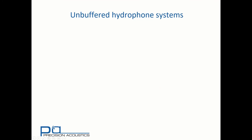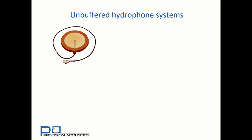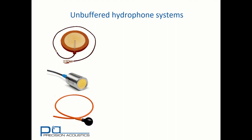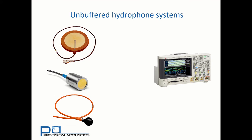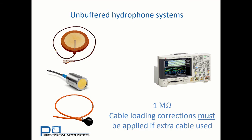If we have an unbuffered hydrophone system that doesn't incorporate a preamplifier — something like an older style Marconi membrane hydrophone, a piston hydrophone, or one of the ball or cylinder hydrophones that are common in underwater acoustics — these have their sensitivity determined at the end of cable, so must be connected directly to an oscilloscope using the one megaohm input impedance. If you put any additional length of cable between hydrophone and oscilloscope, cable loading corrections must be applied. In this case, it's recommended you contact the Precision Acoustics technical team for further information.